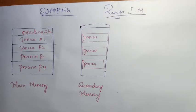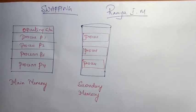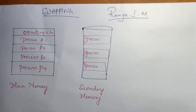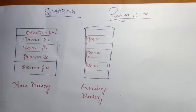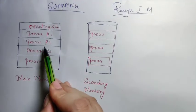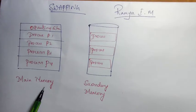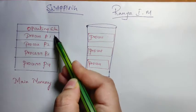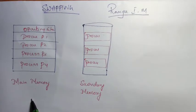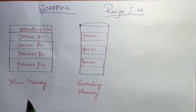In today's session we are going to learn what is meant by swapping. Before that, I will explain the basic concept of a multiprogramming system. In a multiprogramming system, we can store multiple processes in main memory — P1, P2, P3, P4 — and the CPU can execute all these processes in an efficient manner. That is the advantage of multiprogramming.